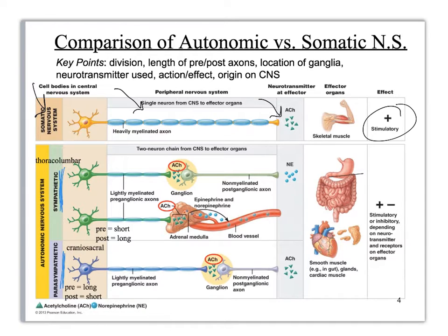Sympathetic has a short presynaptic neuron. It releases acetylcholine at the first synaptic junction, and then it has a longer postsynaptic neuron which goes to the effector organ, but it releases norepinephrine. Depending on what organ it is, it can either be excitatory or inhibitory.